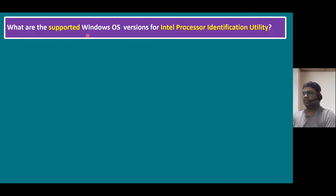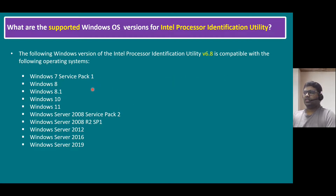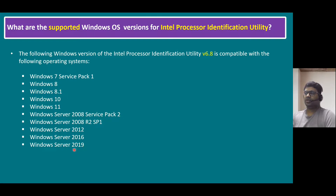What are the supported Windows operating system versions for this Intel Processor Identification Utility? Currently it supports all Windows flavors from Windows 7 through the latest Windows 11. For server OS, it supports Windows Server 2008 R2 SP1, 2012, 2016, and up to 2019. Maybe the latest version 2022 will be added in a future edition. So whether testing on a client OS or Windows Server OS before installing Microsoft Hyper-V, you can use this utility.